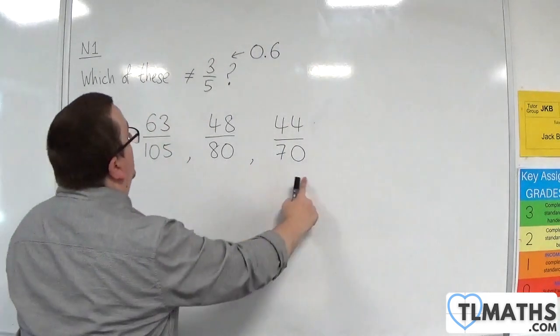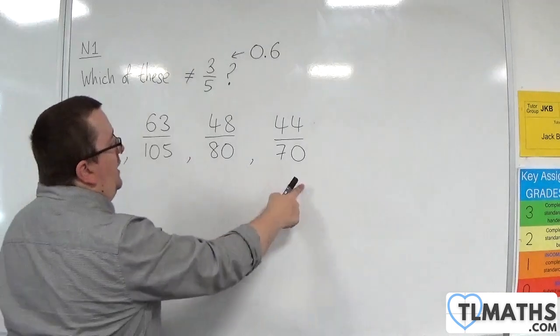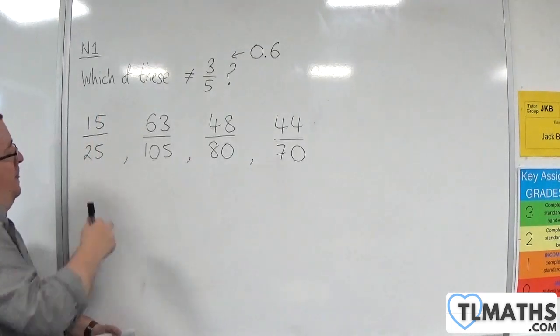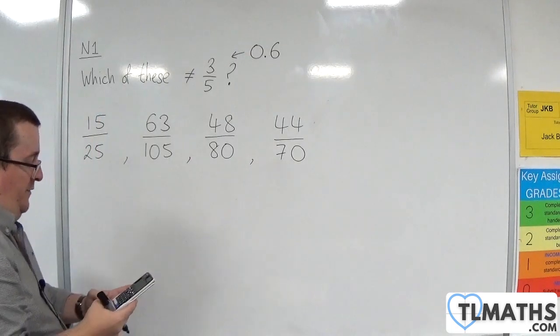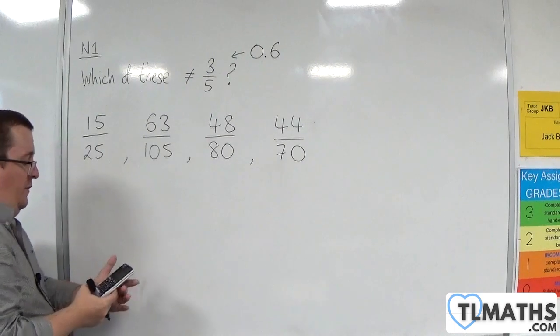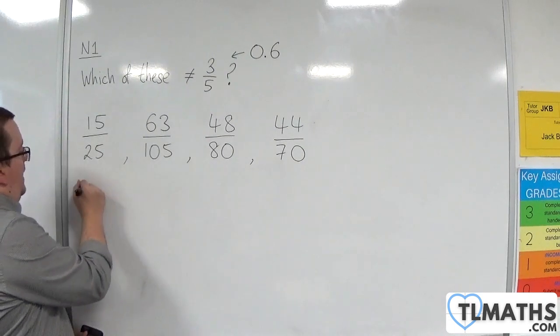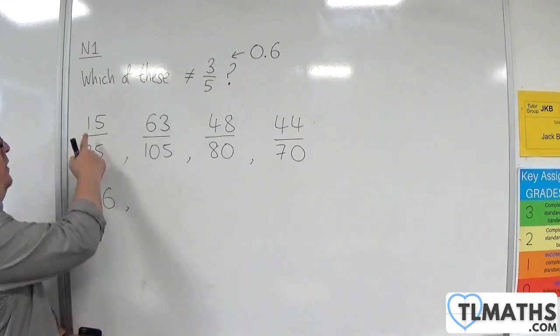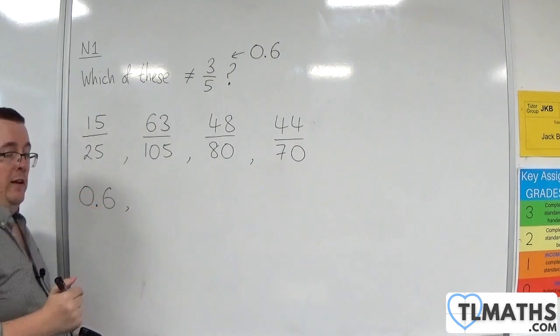So we want to see which one of these is not equal to 0.6. So first one, 15 divided by 25, convert it into a decimal, and we get 0.6. So that's not the one we're looking for.